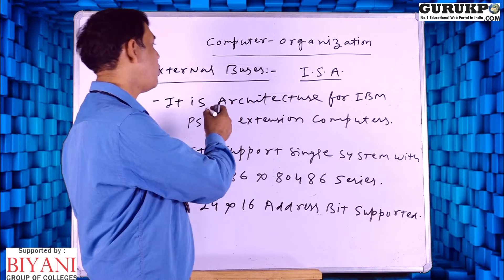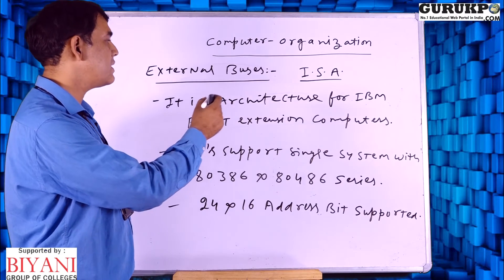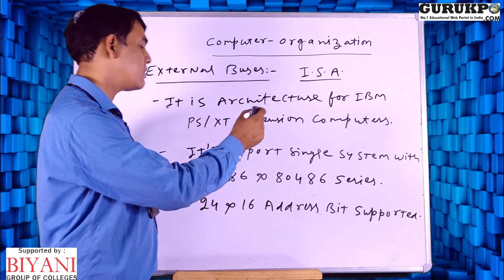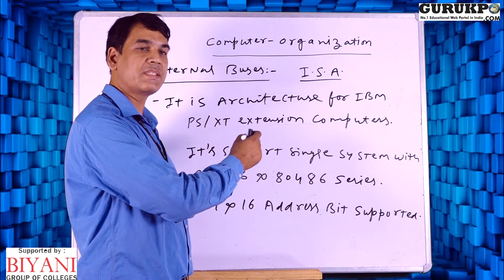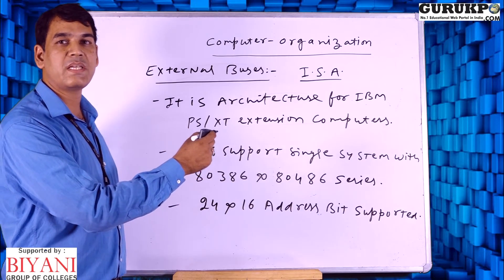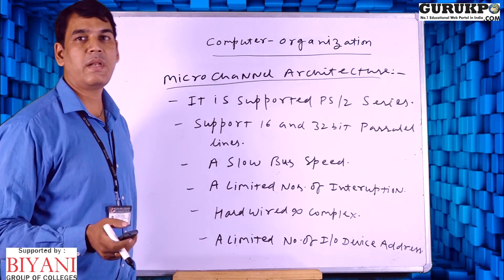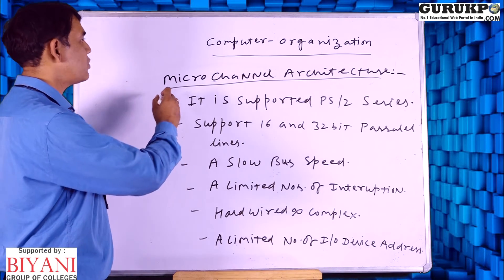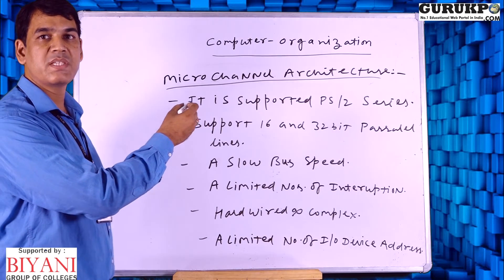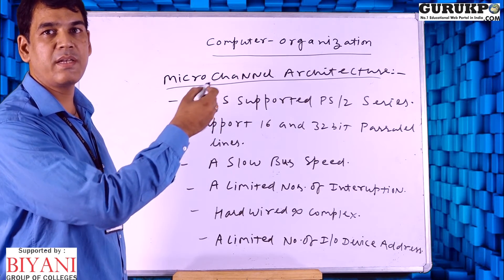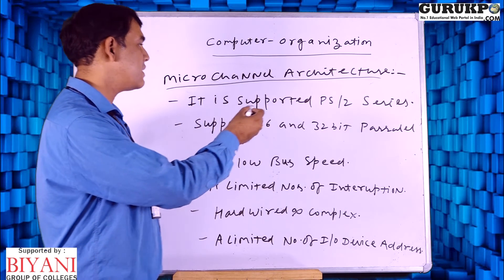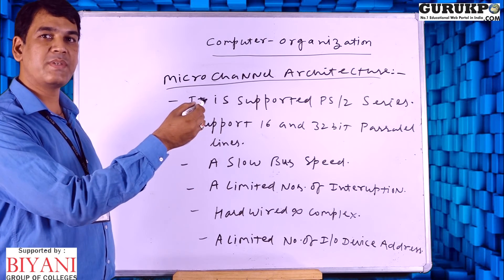ISA, or Industry Standard Architecture, is an architecture for IBM PC/XT extension computers, again defined by IBM. It supports systems with 80386 and 80486 series processors, and it supports 24-bit as well as 16-bit address lines. Micro Channel Architecture, or MCA, is another type of bus architecture also defined by IBM, supporting PS2 series computers with 16-bit as well as 32-bit processor lines.